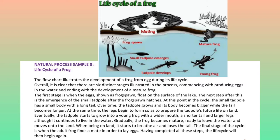Gradually, the frog becomes mature, ready to leave the water and move onto the land. When on land, it starts to breathe air and loses the tail. The final stage of the cycle is when the adult frog finds a mate in order to lay eggs. Having completed all these steps, the life cycle will then begin again.